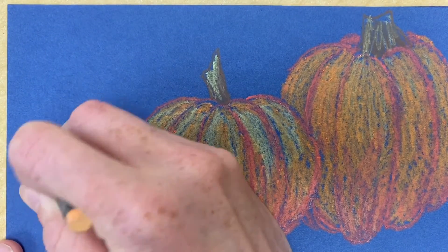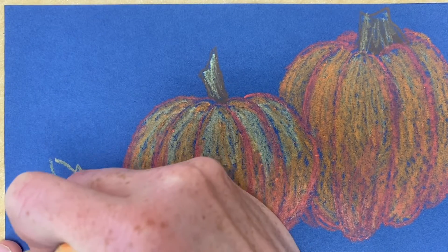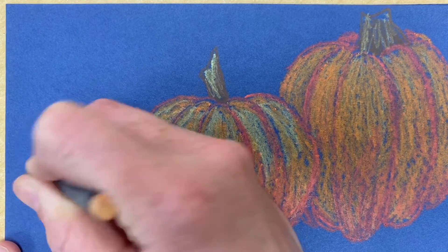If you want to, you can draw other things like leaves around your pumpkins or think of other things that go with fall to add to your drawing.